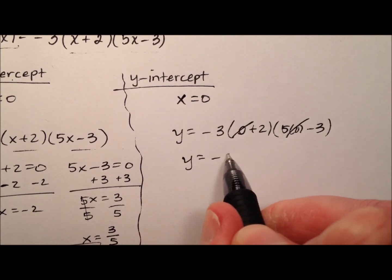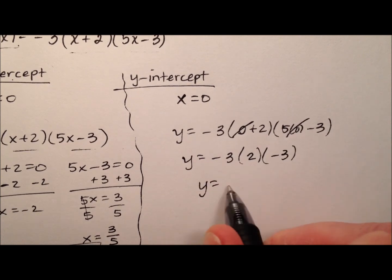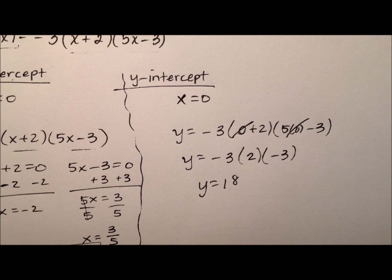And what we end up with is negative 3 times 2 times negative 3, which when you multiply all that stuff together, you get a positive 18.